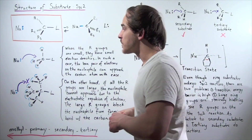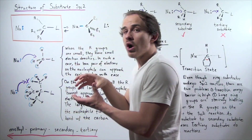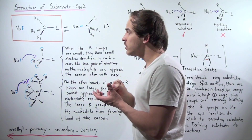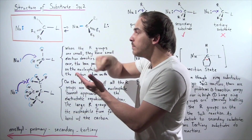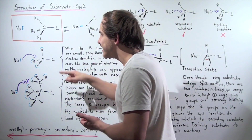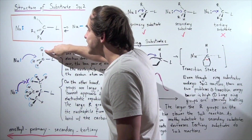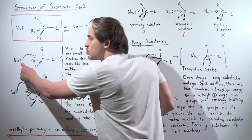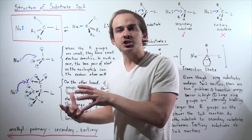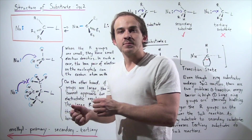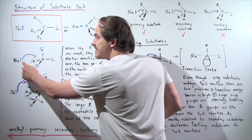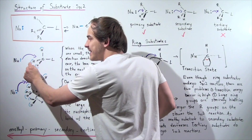Each of these H atoms has one proton inside the nucleus, and our electron is orbiting our nucleus. So this electron creates an electron density around our nucleus, around our H atom. Now when these two electrons get close to these electrons, there's electrostatic repulsion between our electrons. Remember, negative charges repel and opposite charges attract.